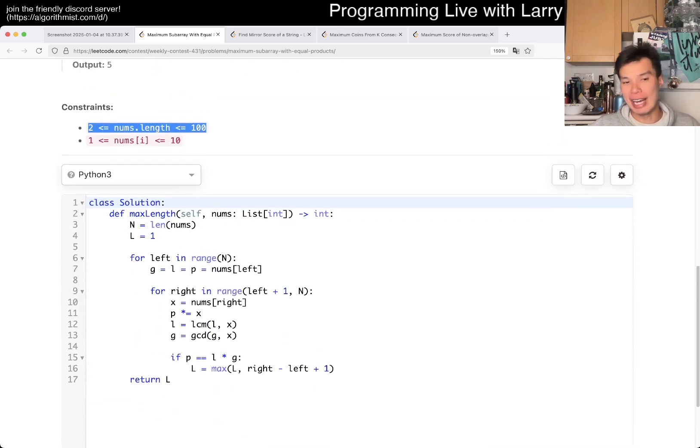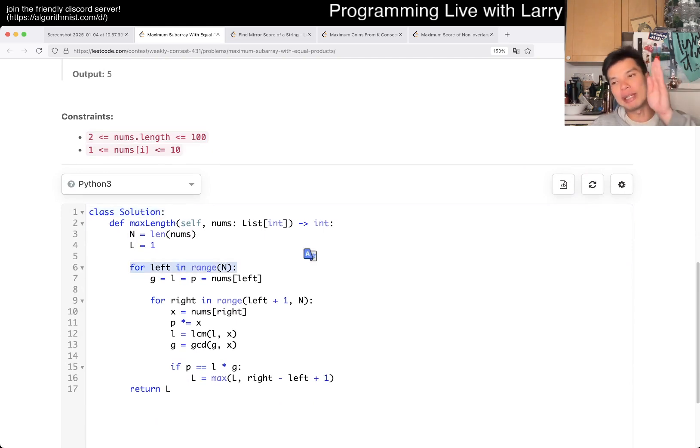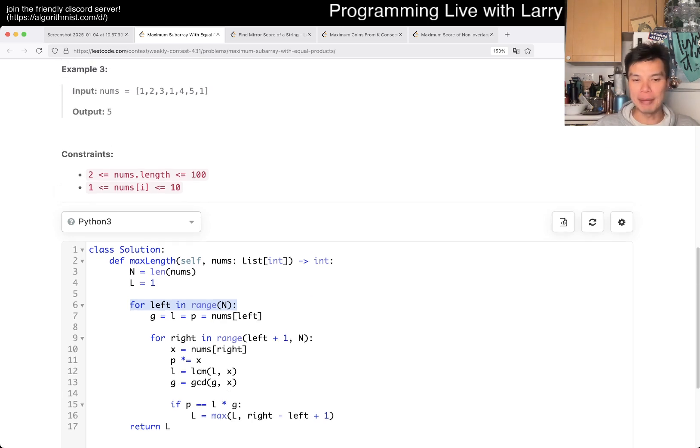This gives you an n-squared algorithm, which is that for every beginning, you just sweep one at a time, because you can do LCM and GCD and of course product incrementally.